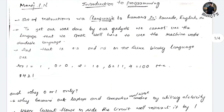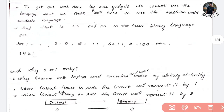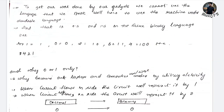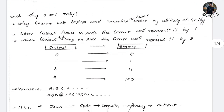Why zeros and ones? Because if you are using a computer or mobile device, these are electronic gadgets. If you are using the circuit and current passes through, it will detect 1. If current does not pass, it will detect 0. If you compile these binary signals, you will get output.